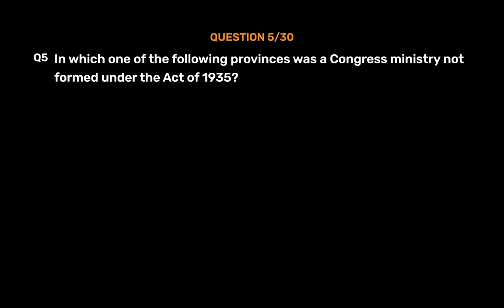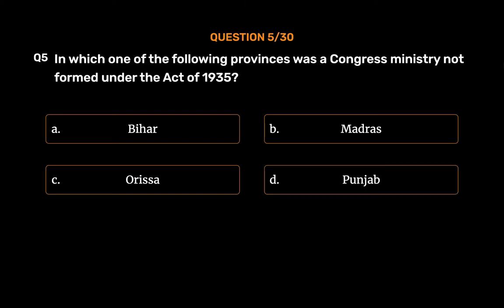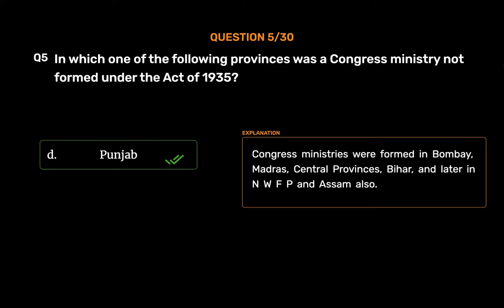Question No. 5. In which one of the following provinces was a Congress ministry not formed under the Act of 1935? Option A, Bihar; Option B, Madras; Option C, Orissa; Option D, Punjab. The correct answer is Option D, Punjab. Congress ministries were formed in Bombay, Madras, Central Provinces, Bihar, and later in NWFP and Assam also.